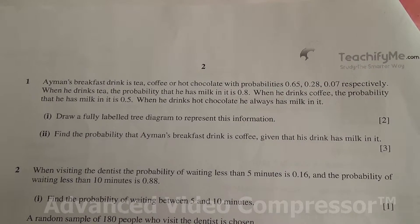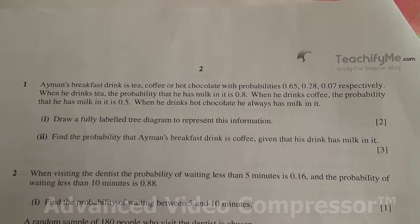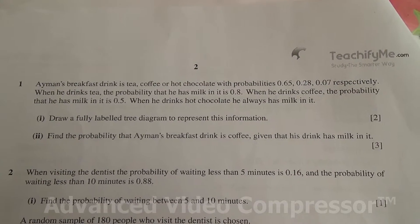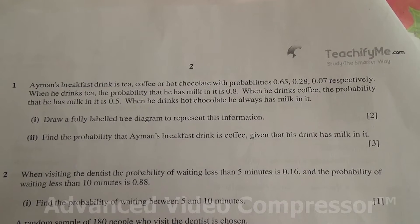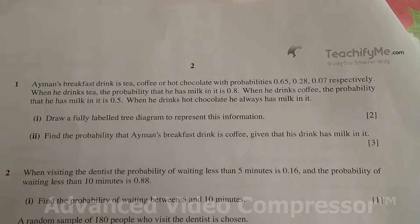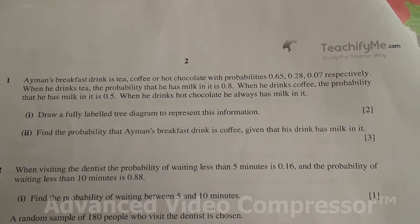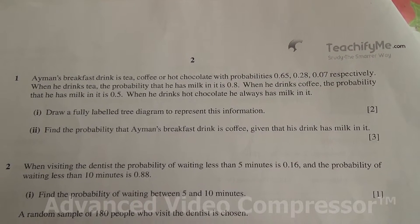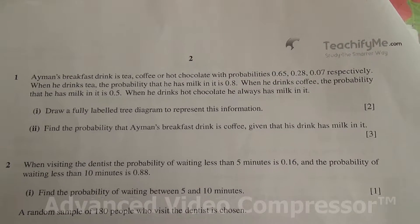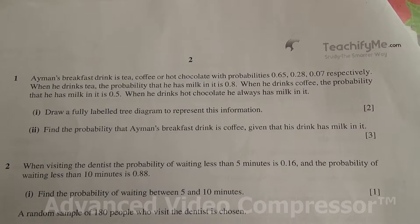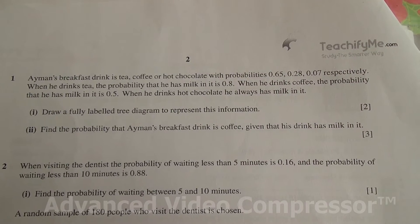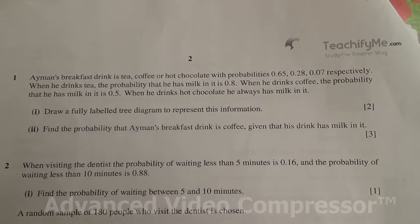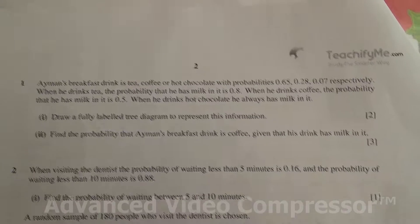When he drinks tea, the probability that he has milk in it is 0.8. When he drinks coffee, the probability that he has milk in it is 0.5. When he drinks hot chocolate, he always has milk in it. Draw a fully labelled tree diagram to represent this information. And for the second part, find the probability that Eamon's breakfast drink is coffee, given that his drink has milk in it.